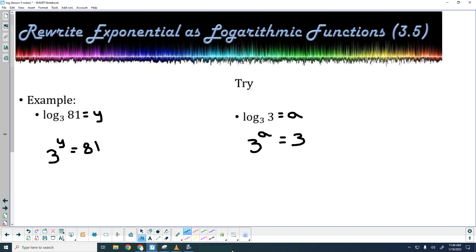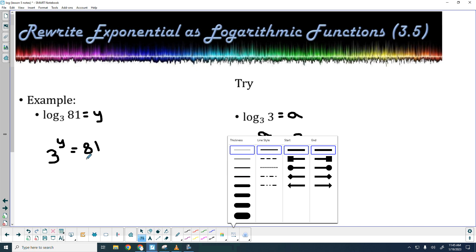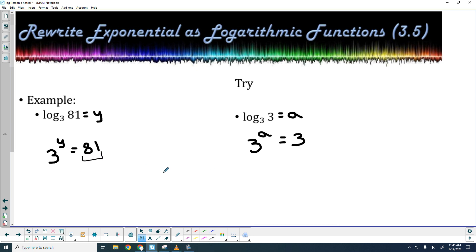And we can actually simplify those down even further. As I look at this, I realize 81 can be rewritten as 3 to the 4th. So, 3 to the Y, and you can choose whatever variable you like, equals 3 to the 4th. We've done some problems like that already. If the bases are the same, the exponents are the same. So, in this case, that is 4. So, log base 3 of 81 equals 4.